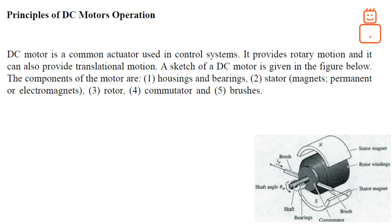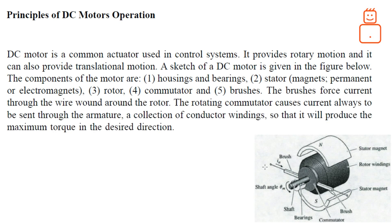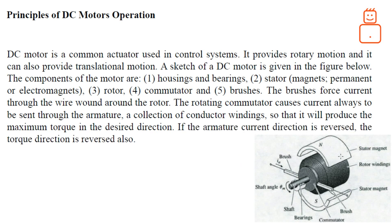We have a rotor, also called the armature, and we have a commutator and brushes. If we supply current through the brushes to the armature, the armature will generate a magnetic field that works against the magnetic field coming from the stator. These two magnetic fields generate rotation or torque in the armature. To reverse the rotational direction, we simply reverse the direction of the current supplied to the armature.